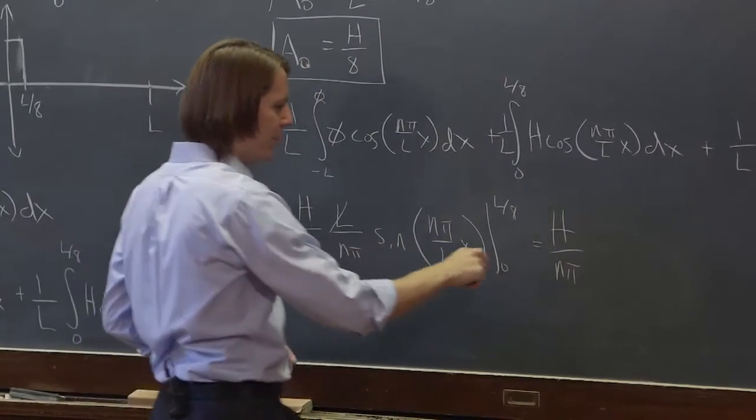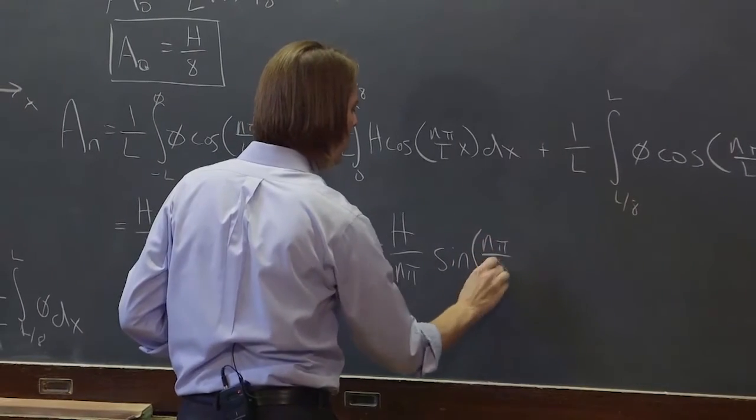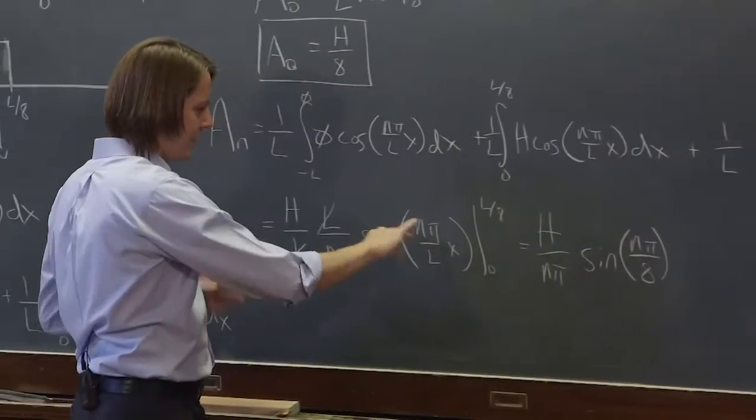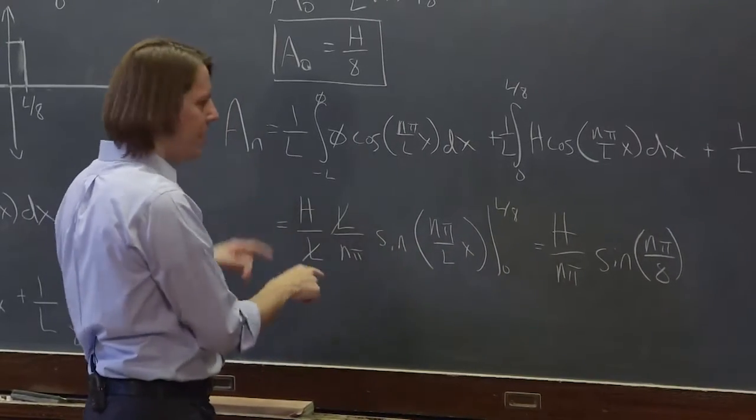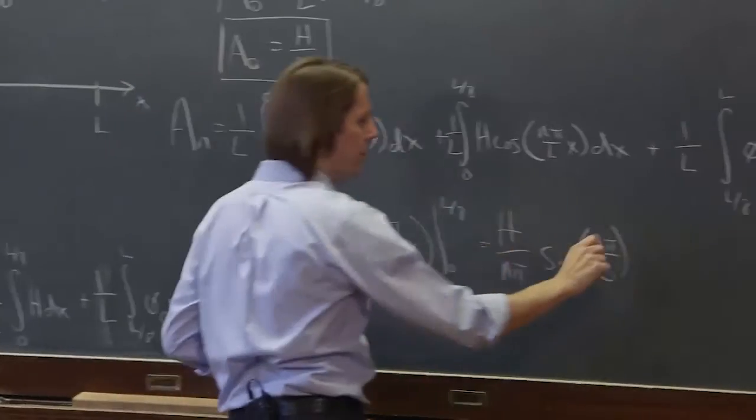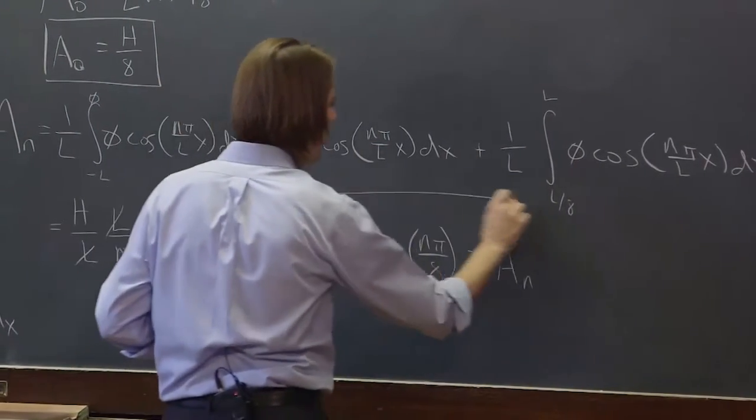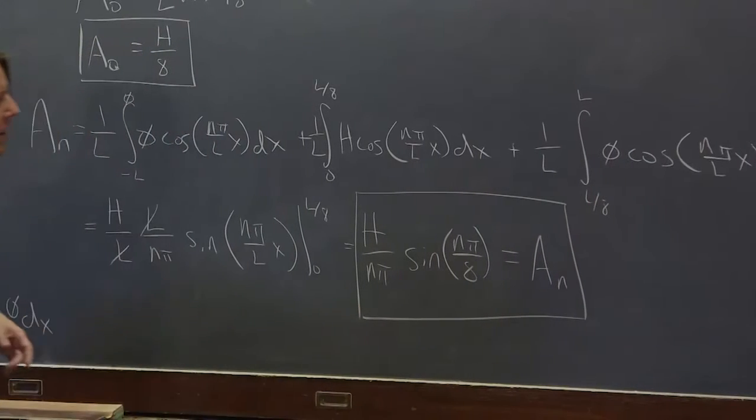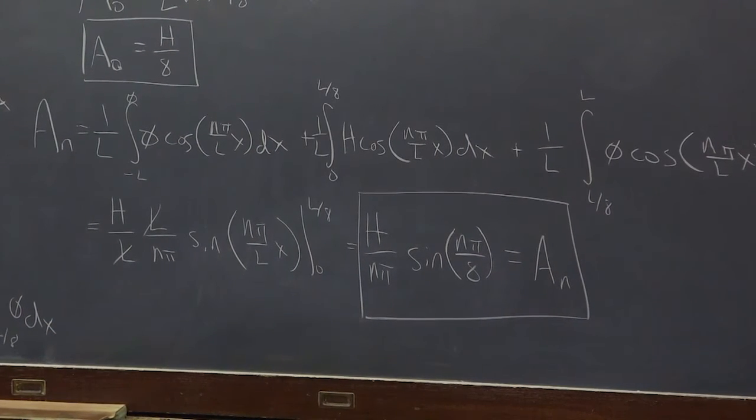And then we plug in l over 8 here, those go away, it's sine of n pi over 8 minus, and then we do all this with 0, the sine of 0 is 0. So here we have aN, the aNs look like that: h over n pi sine of n pi over 8.